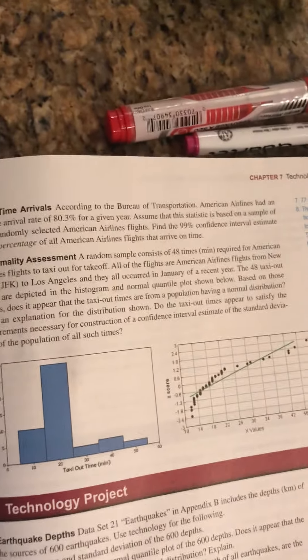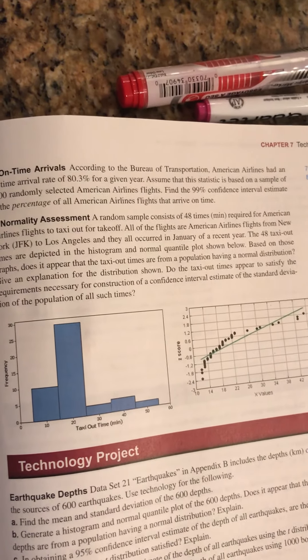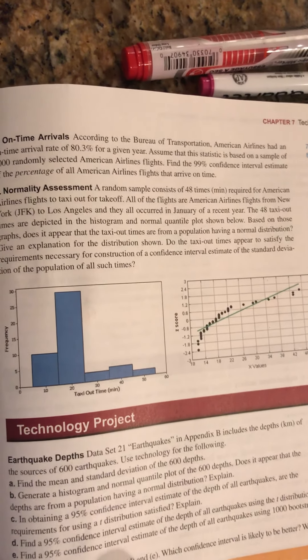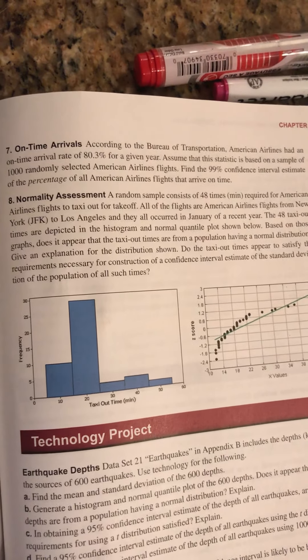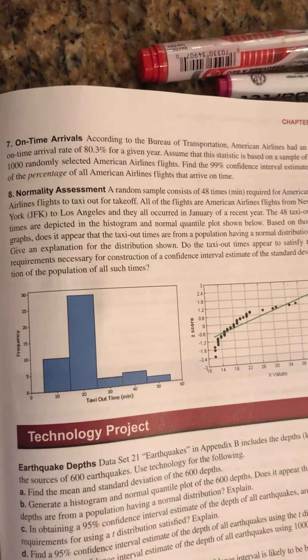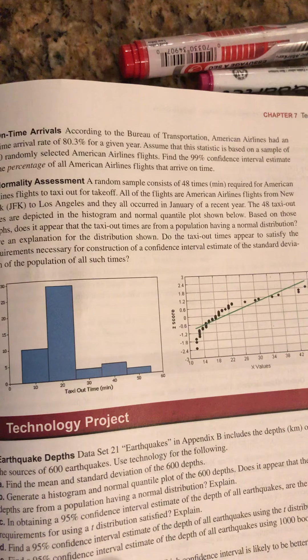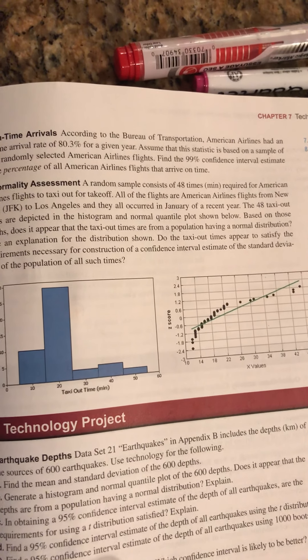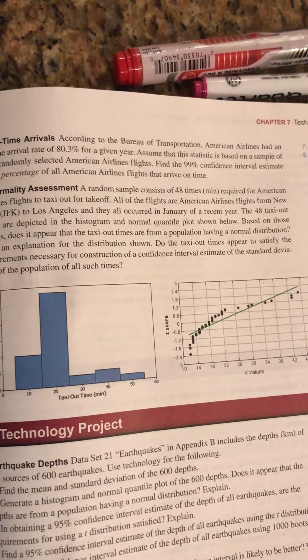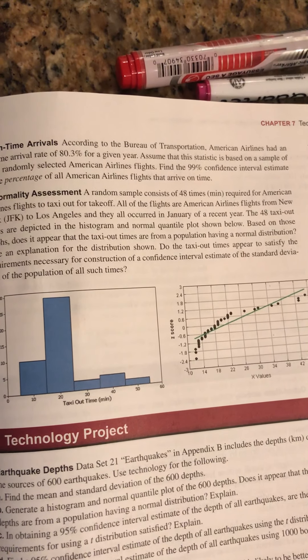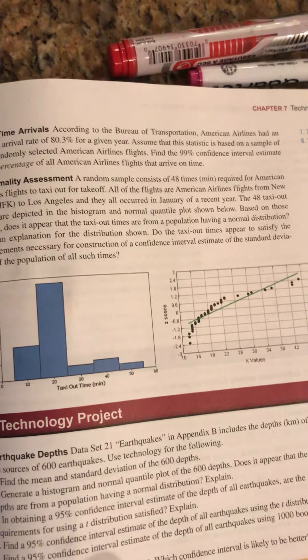I'm going to jump to number seven, where they describe a different sample, not from the 11 original values we talked about earlier, but now a sample coming from 1,000 randomly selected flights. And we are counting the number of those that arrived on time.